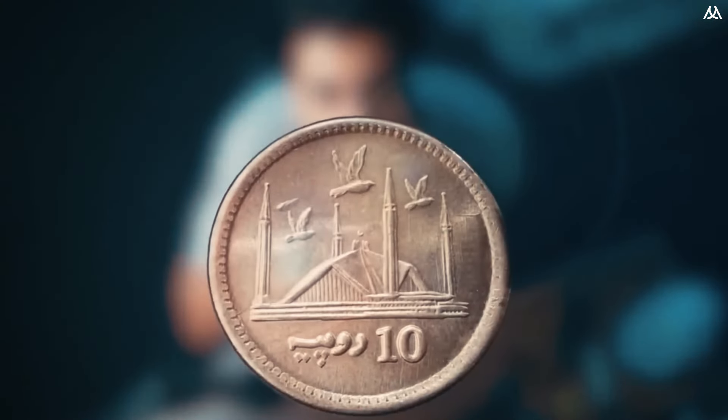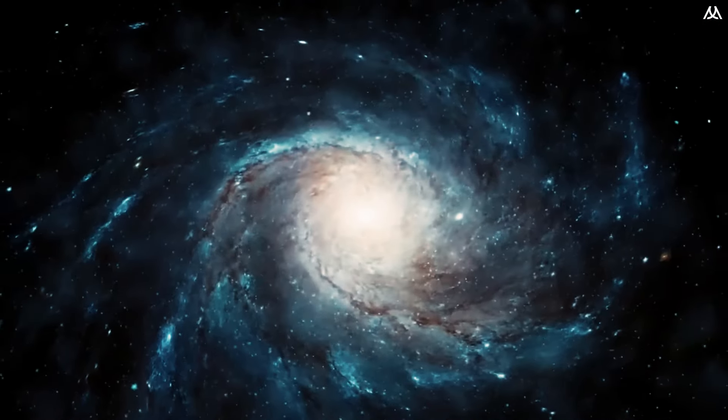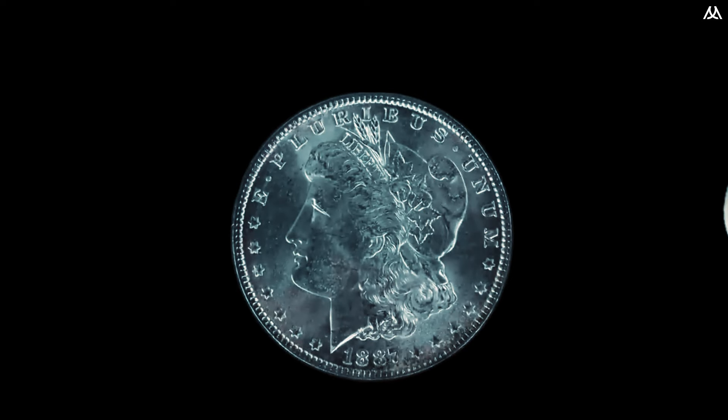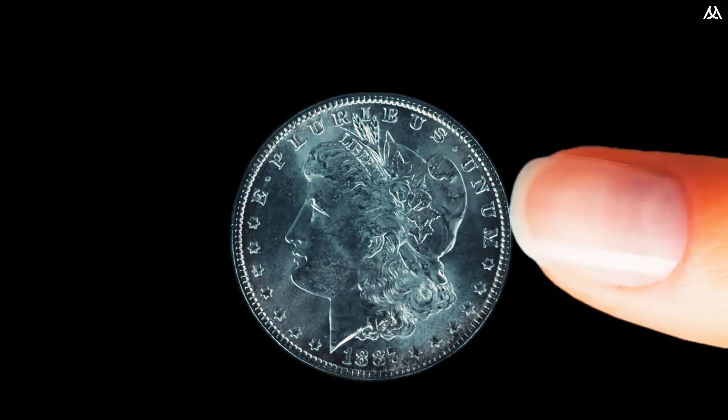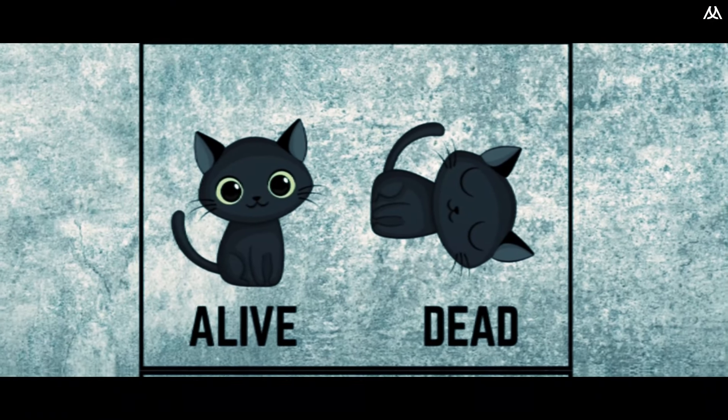Let's imagine a game. Think of a coin in the classical world. This coin can either be heads or tails. But in the world of quantum computing, this coin, or qubit, can exist in a state of both heads and tails simultaneously, a concept known as superposition. This is similar to Schrodinger's cat, which is both alive and dead until observed.